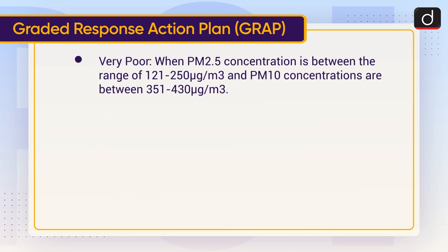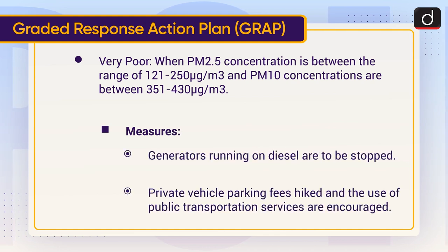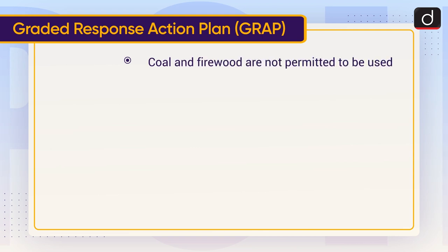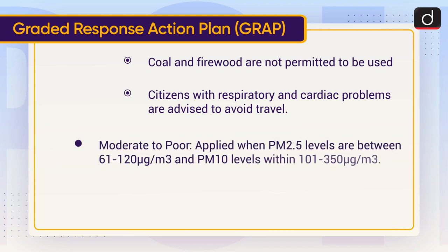The third GRAP category is Very Poor, when PM2.5 concentration is between 121–250 micrograms per cubic meter and PM10 is between 351–430 micrograms per cubic meter. Measures include: stopping diesel generators, hiking private vehicle parking fees and encouraging public transportation, banning use of coal and firewood, and advising citizens with respiratory and cardiac problems to avoid travel.